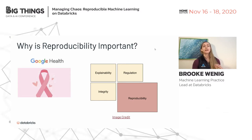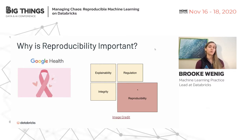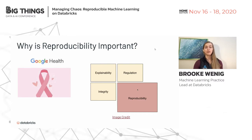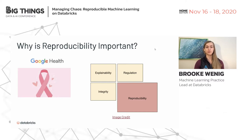If I can't reproduce the model, I can't trust anything about it anymore. Key tenants of machine learning — explainability, regulation, integrity — but reproducibility is so key these days. Now I want to walk you through what I consider to be the key aspects for reproducible machine learning.